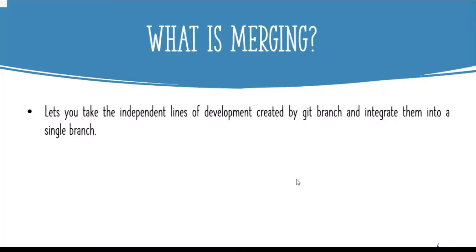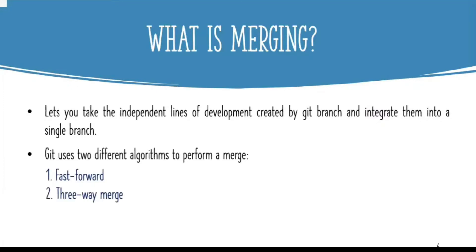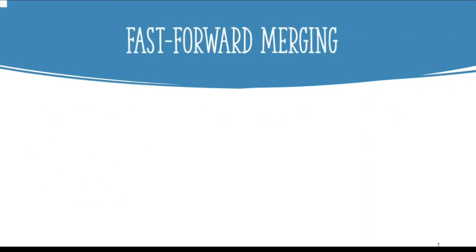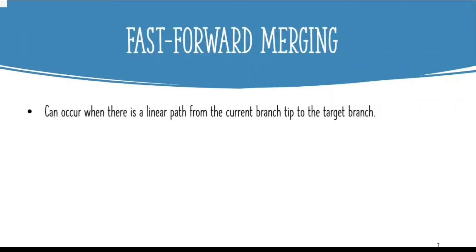Git uses two different algorithms to perform a merge. The first one is fast forward and the second one is three-way merge. The merge we just performed was an example of a fast forward merge. This kind of merge occurs when all the commits in the checked-out branch are also present in the branch being merged. In this case, the commit history of both branches doesn't diverge, so all git has to do is update the pointers of the branches to the same commit.